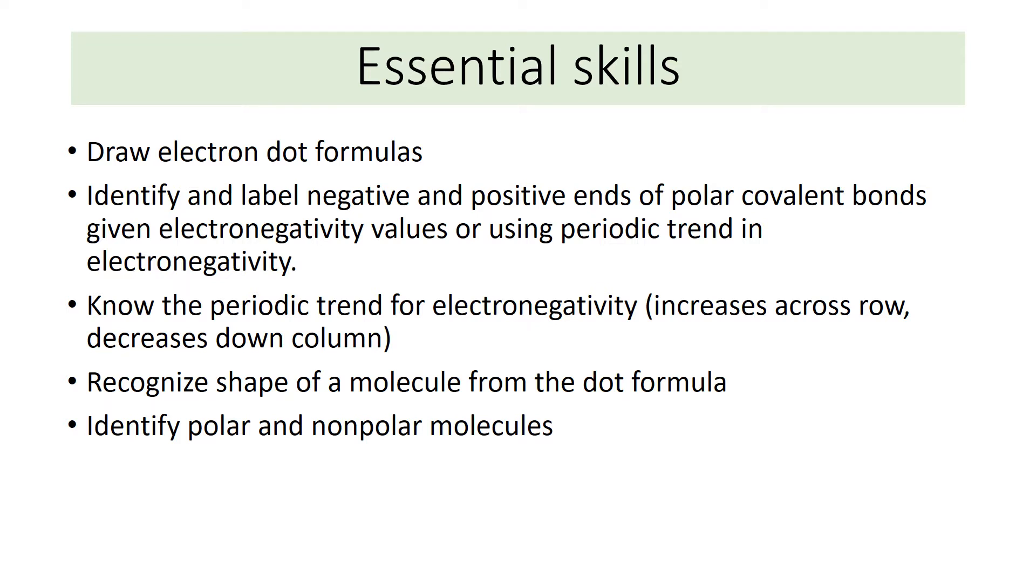Essential skills. Draw electron dot formulas. Identify and label negative and positive ends of polar covalent bonds given electronegativity values or using the periodic trend in electronegativity. Know the periodic trend for electronegativity that it increases across a row and decreases down a column. Recognize the shape of a molecule from the dot formula. Identify polar and nonpolar molecules.